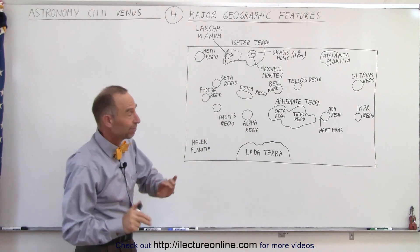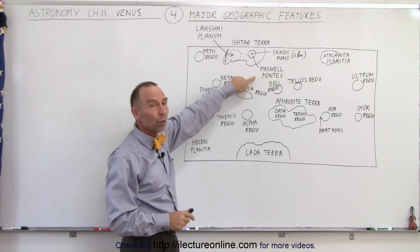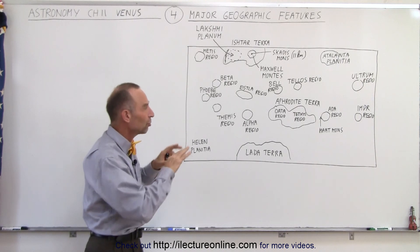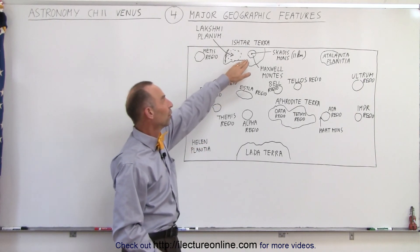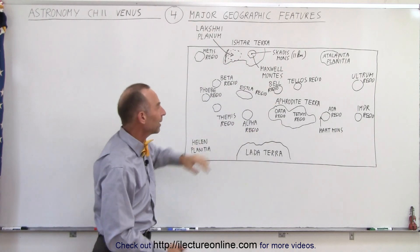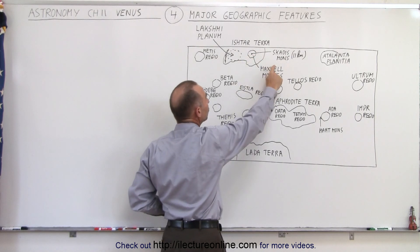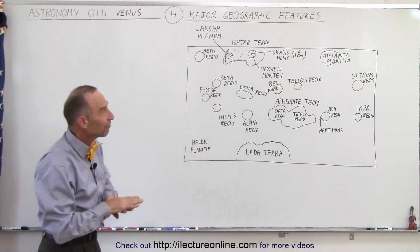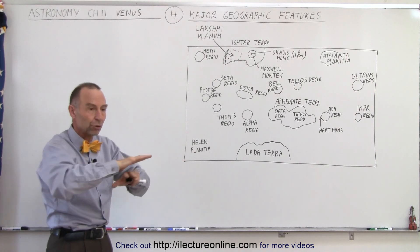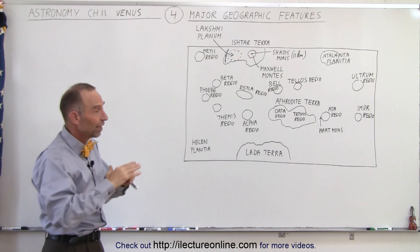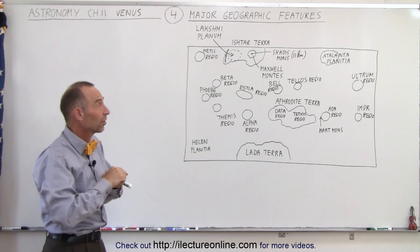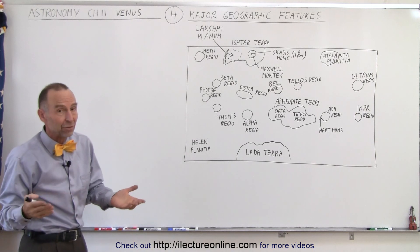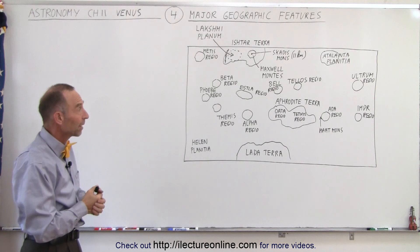Maxwell Mons — Mons means mountains — the Maxwell Mountains were discovered for the first time when they were using radar imaging to see what the surface of the planet looked like. They found this unusual feature that was much higher than everywhere else on the planet. The tallest mountain is part of its mountain range, called Skades Mons. It is 11 kilometers above the average elevation of the planet. If you think of the average elevation of the Earth as sea level, Mount Everest sticks out almost 9 kilometers, while Skades Mons sticks out 11 kilometers above the average elevation of the planet, actually making it a taller mountain than Mount Everest.